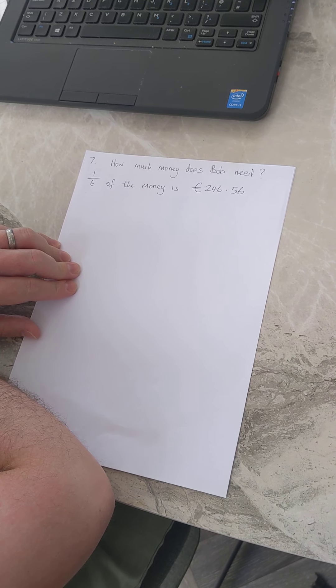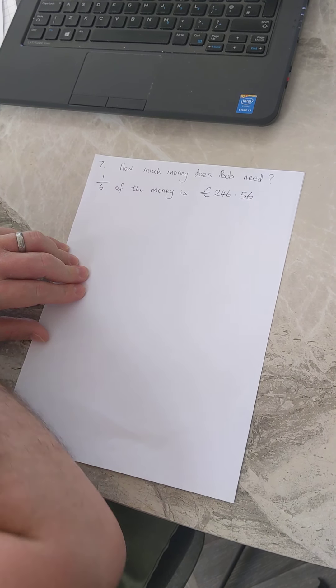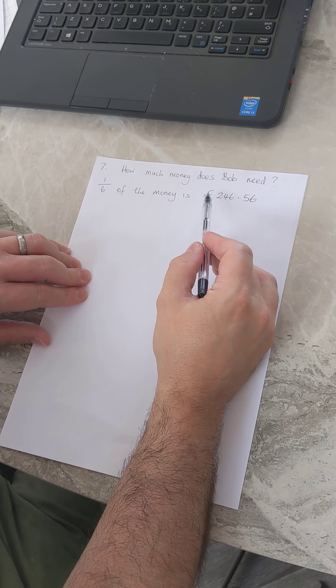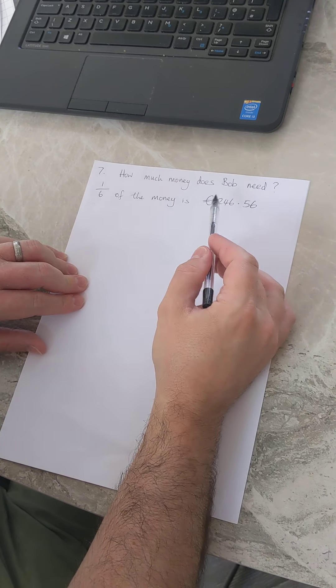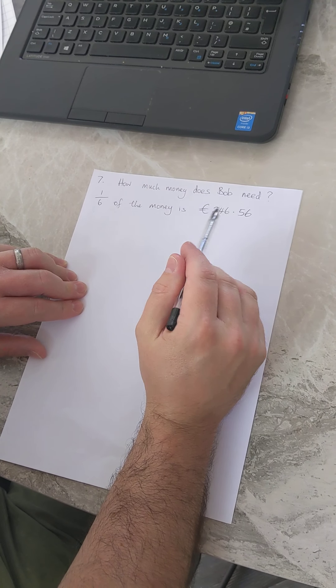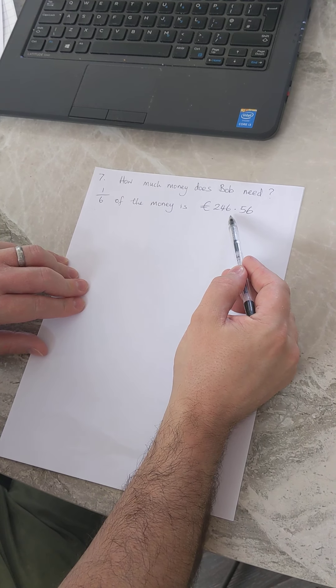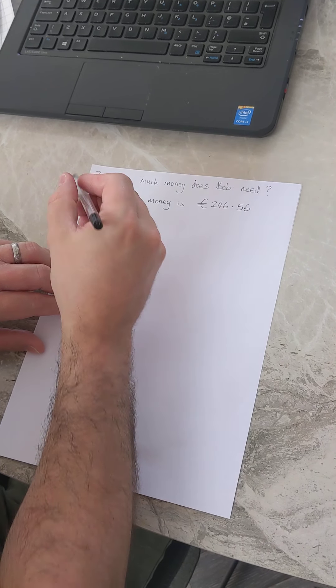We know that one-sixth of the money for the entire building project is 246.56. Now I know it said dollars in the question but I made a mistake and wrote euros so we're just going to go with that. So if a sixth of something is this, then to find the whole thing I need to multiply this by six.